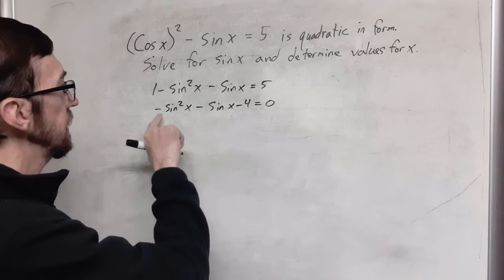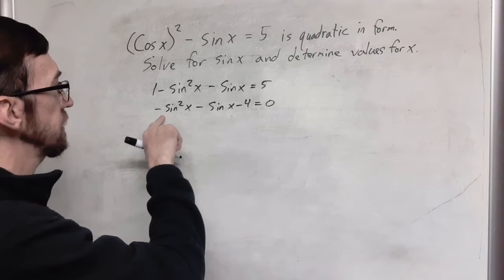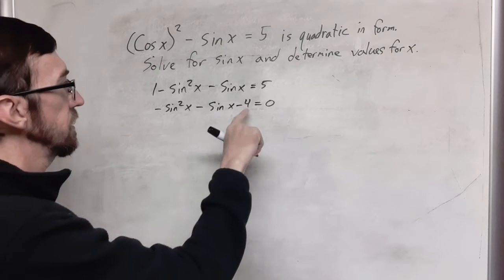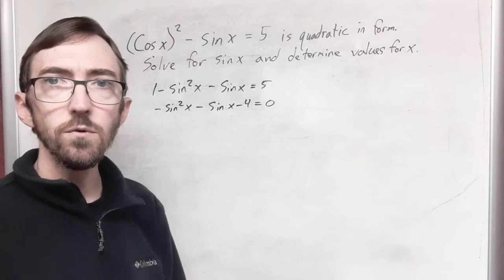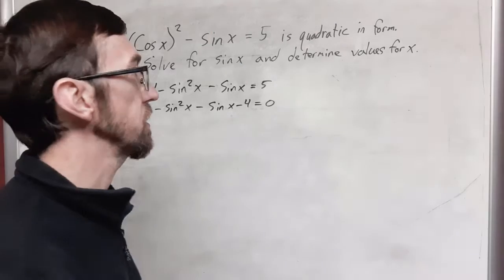So this is going to be negative 4. So now I have a coefficient of negative 1, negative 1, and a constant of negative 4, and this is going to go into the quadratic formula.